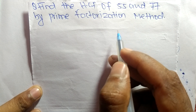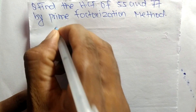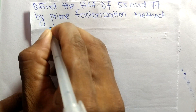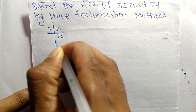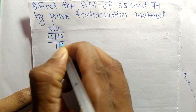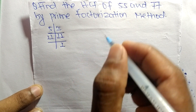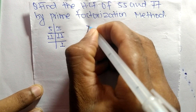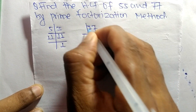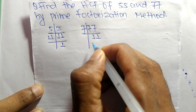First we find out the prime factors of 55: it is 5 times 11, which equals 55, and 11 times 1 equals 11. Similarly, the prime factors of 77 are 7 times 11, which equals 77.